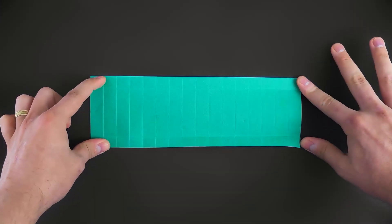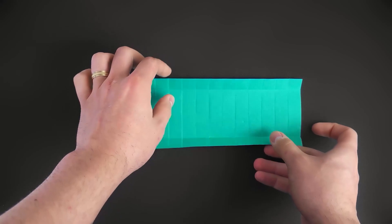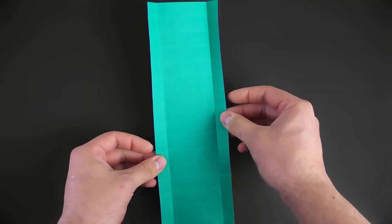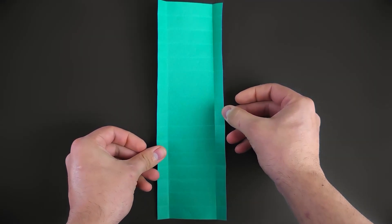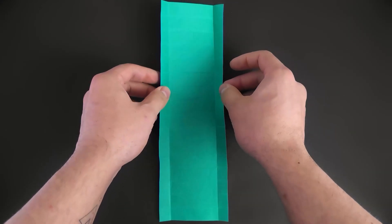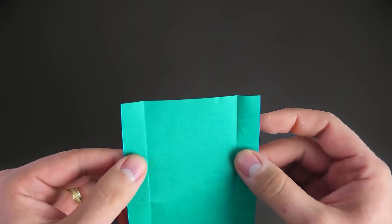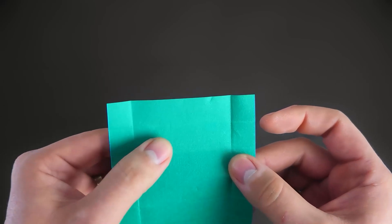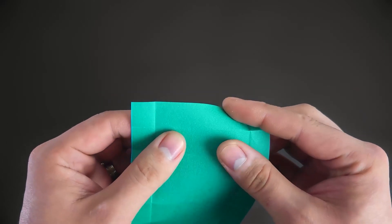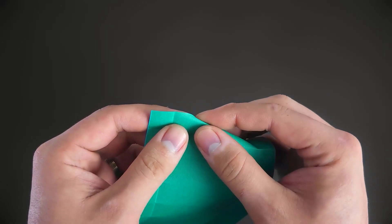Now pay close attention. Holding the paper in this position, we're going to fold diagonally across each of the 16 sections in the middle. To do that, it's actually pretty easy. Just hold the paper like this and fold the crease, connecting the corners like this.